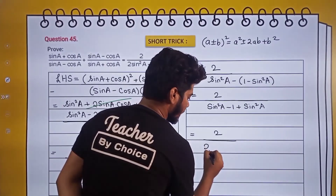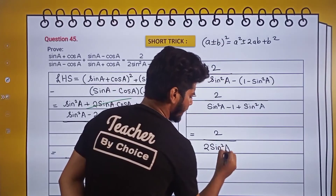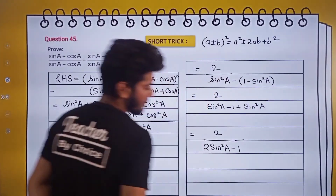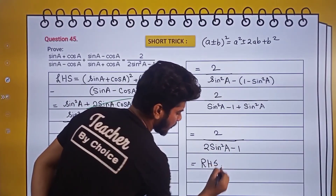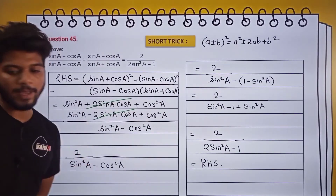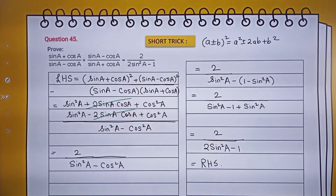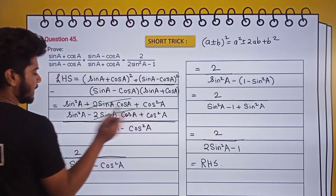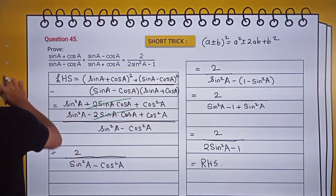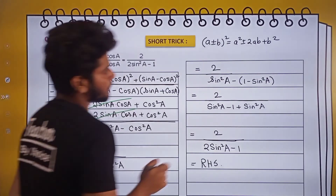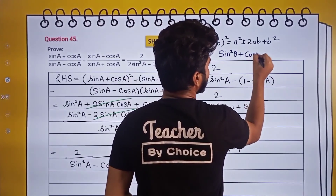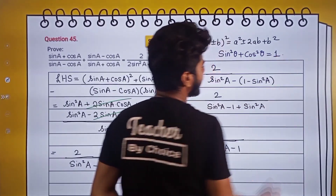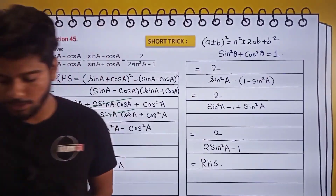This equals the RHS — hence proved. Pause the video, take a screenshot, and copy it into your notebook. The key identity we applied here is sin²θ + cos²θ = 1. By now you should be thorough with this identity.